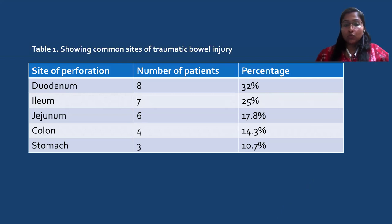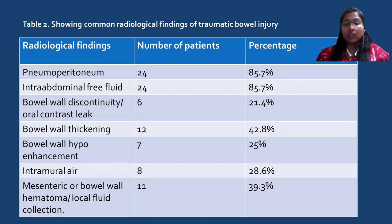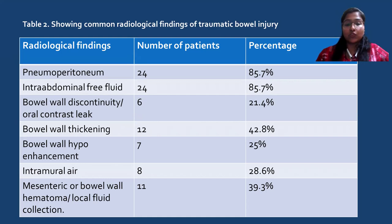This table shows the common sites of perforation, the most common being duodenum, followed by ileum, jejunum, colon, and stomach. The common radiological findings in our study were: pneumoperitoneum in 85.7% of cases, intra-abdominal free fluid in 85.7%, bowel wall discontinuity or oral contrast leak in 21.4%, bowel wall thickening in 42.8%, bowel wall hypoenhancement in 25%, intramural air in 28.6%, and hematoma or local fluid collection in 39.3% of cases.